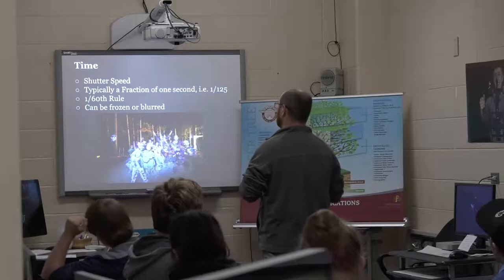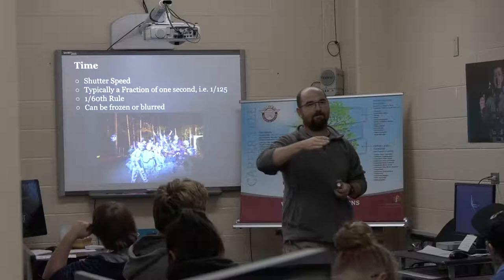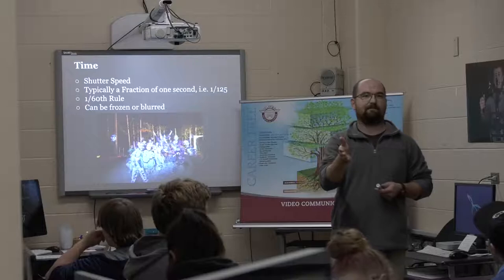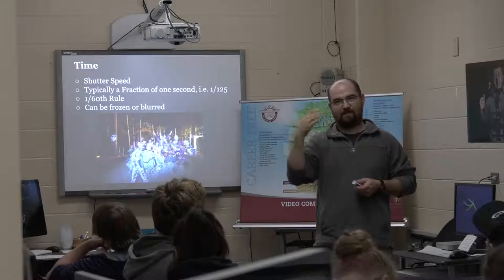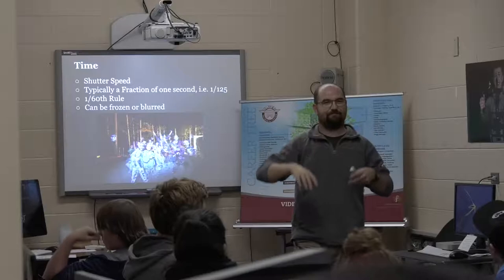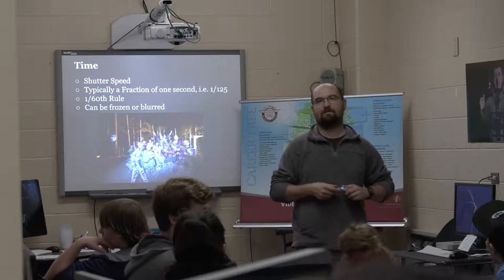Shutter speed starts at one second, then goes to 1/2, 1/4, 1/8 — then from 1/8 it jumps to 1/15 instead of 1/16, then 1/30, 1/60, 1/125, 1/250, 1/500. It doesn't follow perfect doubling exactly, but for the most part it does.